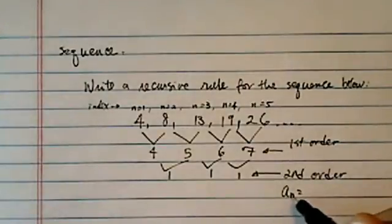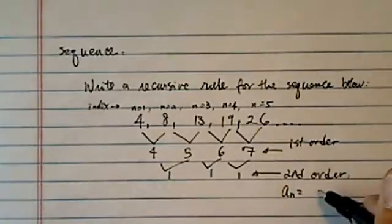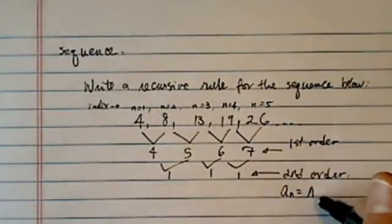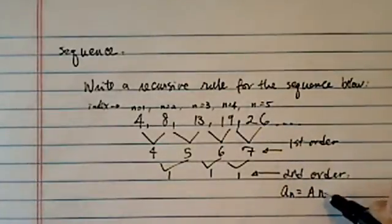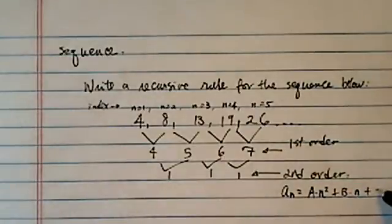So for each term, a specific a_n, for second order we have second order equation which is a, a big constant, times the index squared plus b times index plus c.